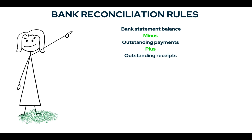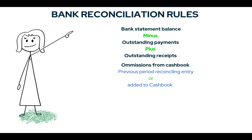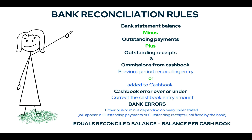If an amount appears in your cashbook and not in the bank statement, it is an outstanding payment or receipt. Outstanding payments must be deducted from the bank statement balance, and outstanding receipts must be added to your bank statement balance for the two bank balances to reconcile. If an amount appears on your bank statement but not on your cashbook, have a look at the previous bank reconciliation, and if it doesn't appear there, it is an omission from your books that has to be added to your cashbook. If an amount is incorrect and it is your fault — as it is highly unlikely for the bank to make transaction errors — you need to correct the amount and redo the reconciliation.